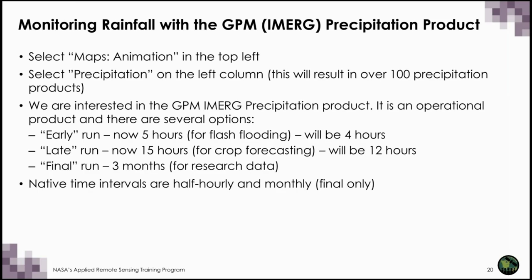The GPM IMERG products available through Giovanni include three runs. The early run uses a limited number of observations and is a multi-satellite product available approximately four hours after observation time. The late run is also a multi-satellite product available approximately 12 hours after observation time, with both forward and backward propagation. The final run, which is a satellite-gauge product, is available about two to three months after the observation month. The early and late runs are generated every half hour, while the final run is generated monthly.